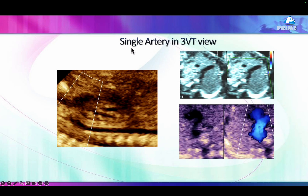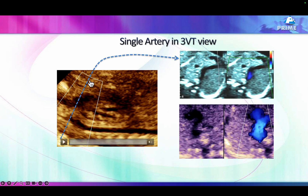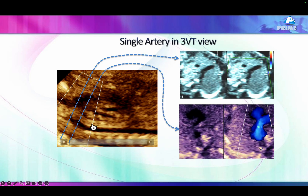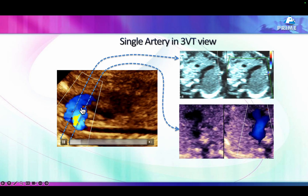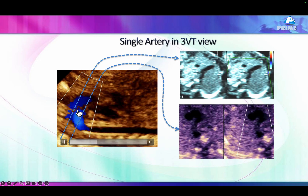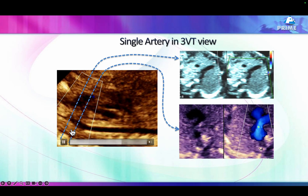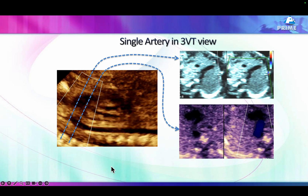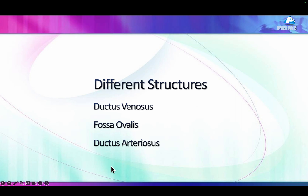In the three-vessel view, you would expect to see both the aorta and the pulmonary artery, but one pulmonary artery is missing. The reason is that when cutting the section in TGA, both vessels are not on the same plane — the aorta is in a lower plane — because the vessels are parallel to each other.